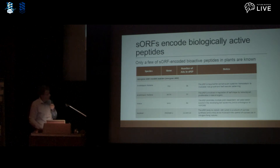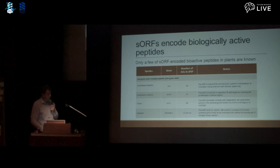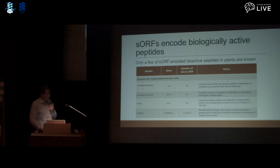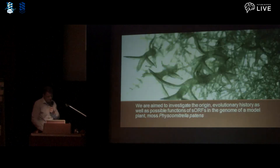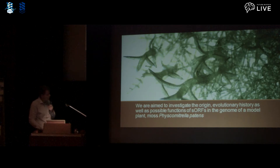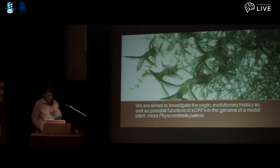Peptides encoded by sORFs can play an important role in the cell, but only a few plant sORF-encoded peptides have been characterized to date. We know very little about these peptides, and our knowledge about sORF evolution, translation, and the function of corresponding peptides should be expanded. In our study, we tried to answer biological questions about sORF evolution, their origin, and the function of peptides encoded by sORFs. For this work, we chose the small plant Physcomitrium patens.